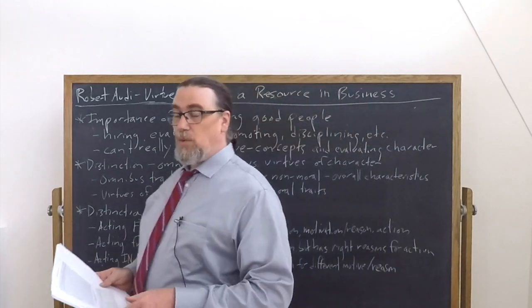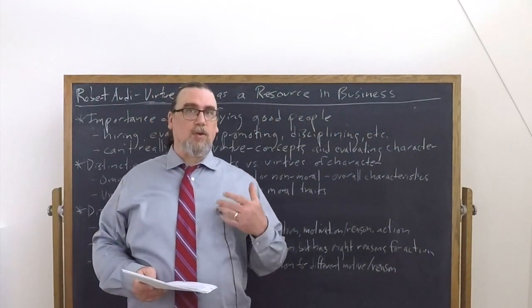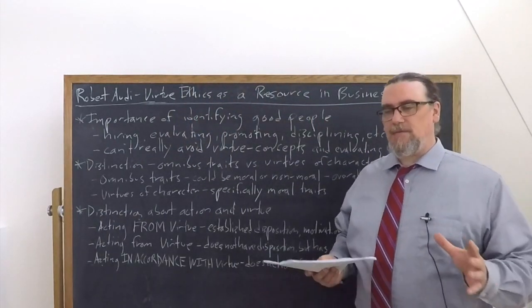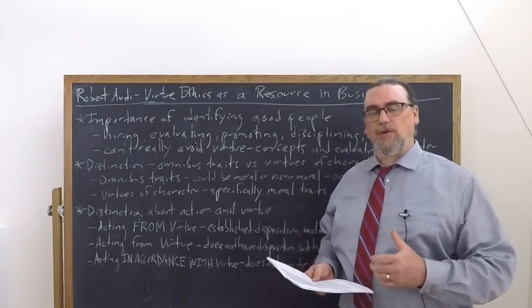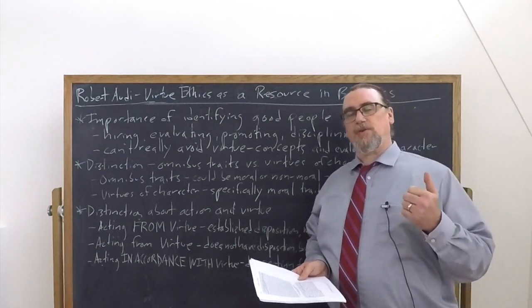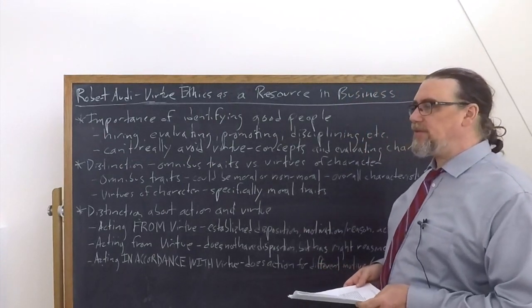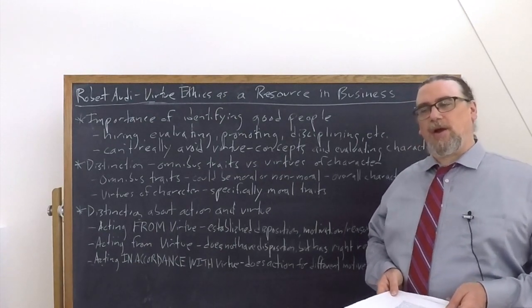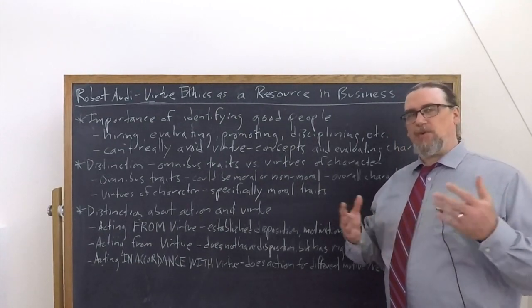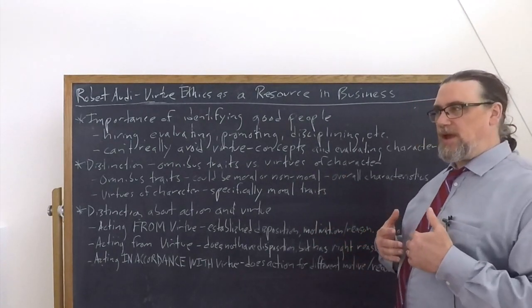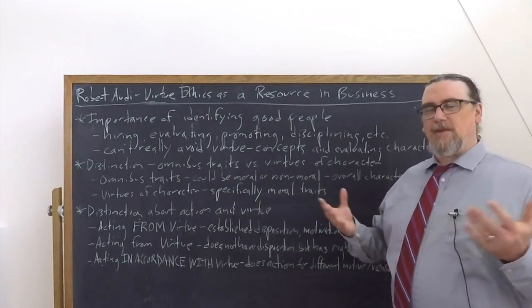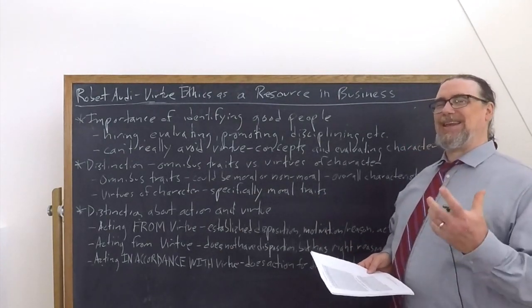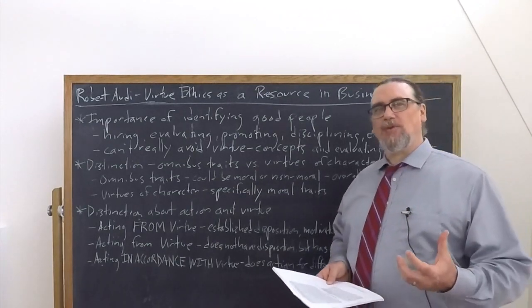In Virtue Ethics as a Resource for Business, Robert Audi is going to make some very useful distinctions for us about how we can evaluate a person's character in terms of virtues and also by extension in terms of vices. And we might say, why is it important that we care about people's character at all? Isn't it really more about the results or whether they fit the role or whether they just did the right thing, they followed the rules and procedures?